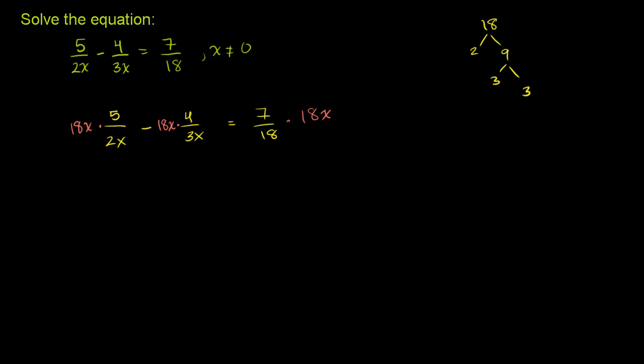Now when we do that, our denominators will disappear. x divided by x is 1. 18 divided by 2 is 9. So this term becomes 9 times 5, which is 45.